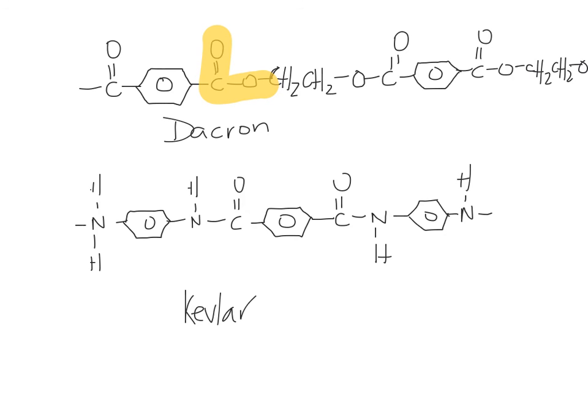So this is the structure of Kevlar. And here we have an amide bond. But you can see here are the two repeating monomers. We have this monomer and we have this monomer. And they alternate.